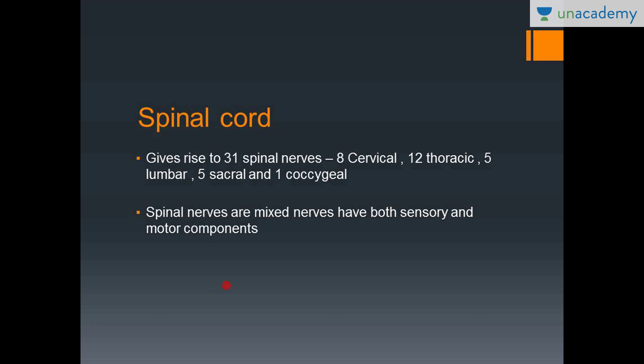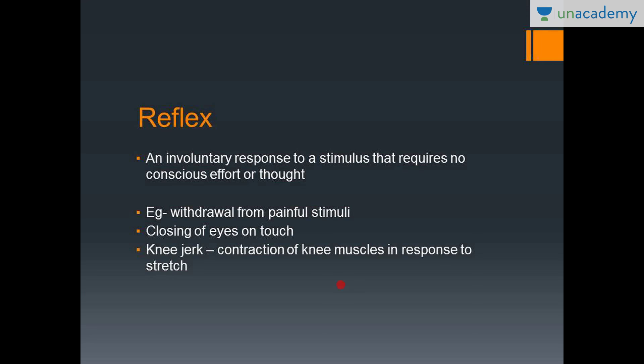The spinal cord gives rise to 31 spinal nerves. It has divisions just like the spine: cervical, thoracic, lumbar, sacral, and coccygeal. From the cervical we have 8 nerves, from the thoracic 12, from the lumbar 5, from the sacral 5, and 1 coccygeal nerve — making 31 spinal nerves in total. The spinal nerves are mixed, meaning they contain both sensory and motor information.